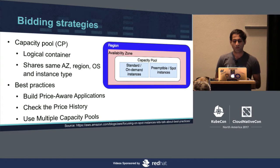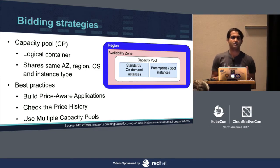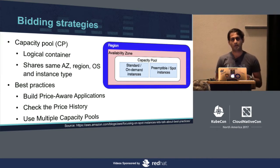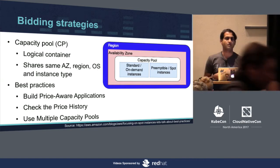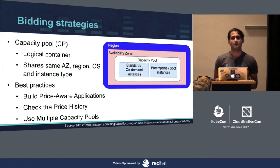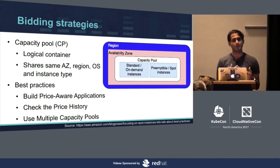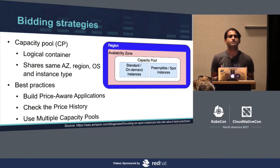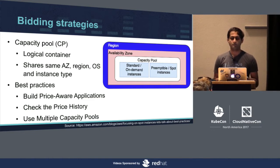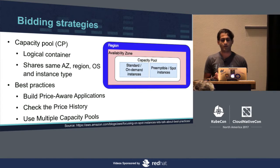Some best practices when choosing capacity pools: one, make your applications price-aware — if not attached to a particular instance type, choose a lower-cost instance. Another important thing is checking the history of instances, either manually or automated, to figure out costs and decide which capacity pool is best. Crucially, when deploying a cluster, choose multiple capacity pools composed of both preemptible and spot instances so your application always runs and your service never goes down.